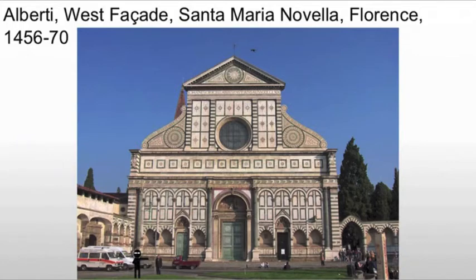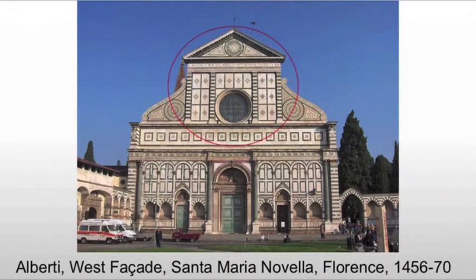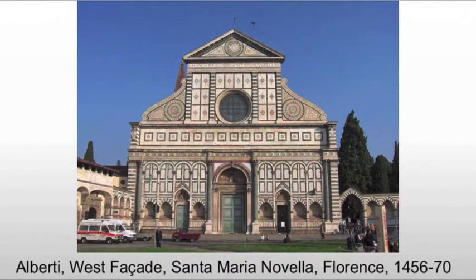What he's going to do is design a small, pseudo-classical, pediment-capped temple front for the upper half. And he will support it with a pilaster-framed arcade that incorporates the six tombs and three doorways that were already in the Gothic structure. He did, however, apply Renaissance principles throughout.